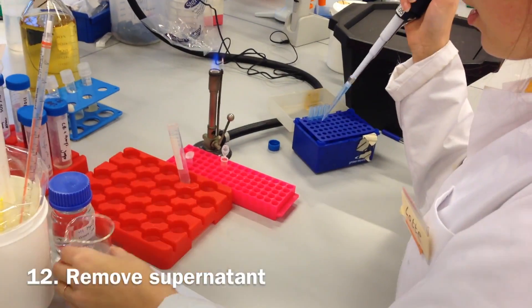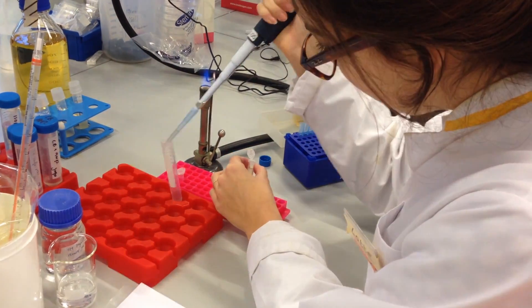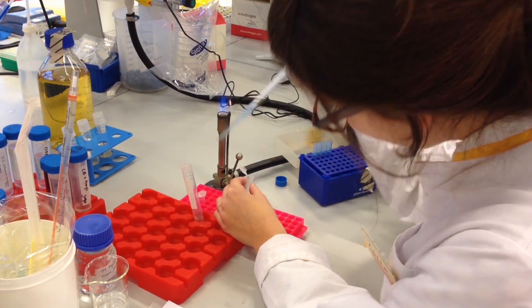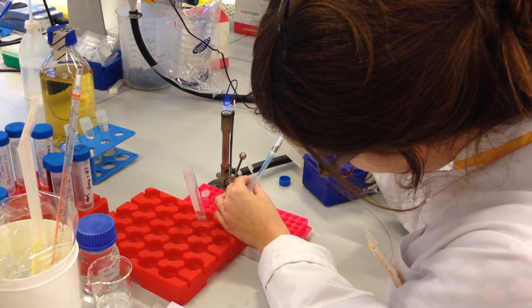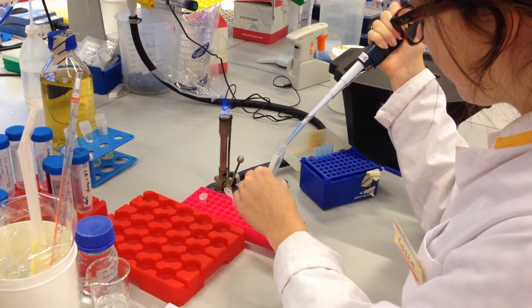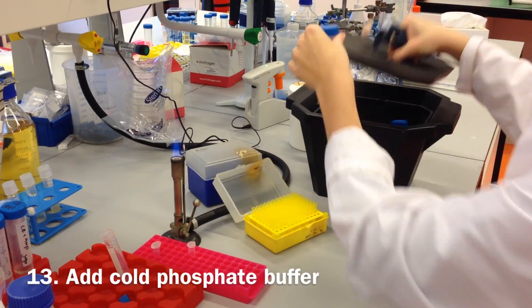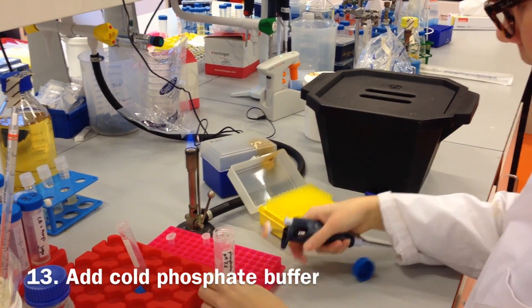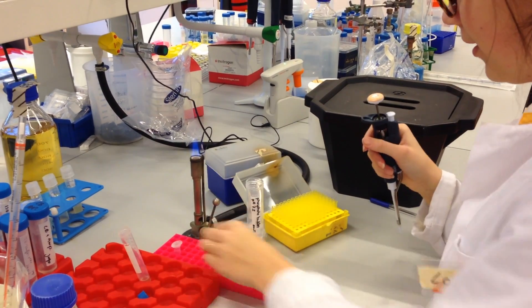After centrifugation, remove the supernatant from the eppendorf by carefully pipetting it out. Make sure you do not touch or disrupt the pellet. Wash the pellet by adding cold phosphate buffer. Gently tap the eppendorf to re-suspend the pellet.